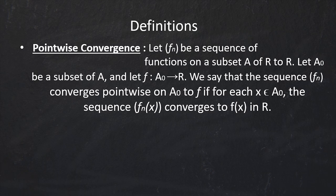What is pointwise convergence? If fn is a sequence of functions on a subset A of real numbers to ℝ — so basically fn is a sequence of real valued functions — and suppose A₀ is a subset of A, and we have defined f to be a function from A₀ to ℝ, then we say that the sequence fn converges pointwise on A₀ to f if for each x in A₀ the sequence fn(x) converges to f(x).